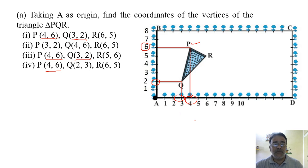And the last one, the point R. The coordinates of point R is, the x coordinate is 6 and the y coordinate is 5. So 6, 5. So finally we conclude that the correct option is the first bit, that is P 4, 6, Q 3, 2 and R 6, 5.